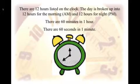Another quick review: there's 12 hours on the clock. Even though there's 24 hours in a day, it's broken up into 12 hours for the morning, which is AM, and 12 hours for the night, which is PM. There's also 60 minutes in one hour. That's why we skip count by fives. And there's also 60 seconds in one minute.